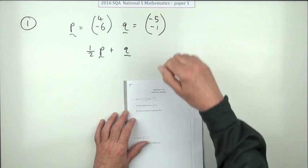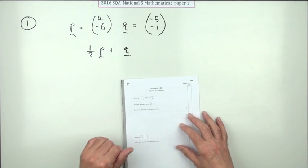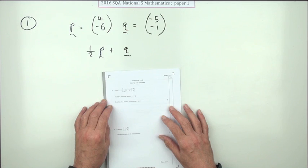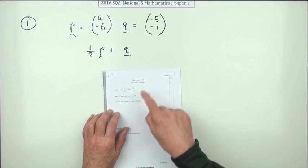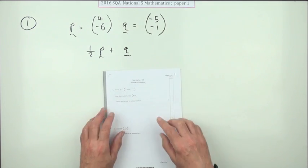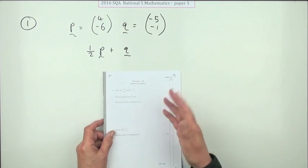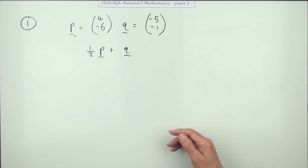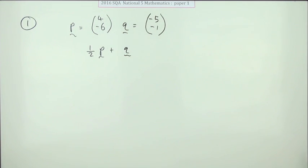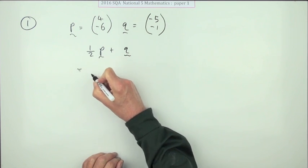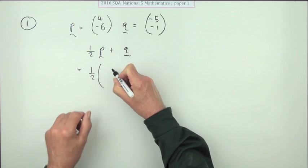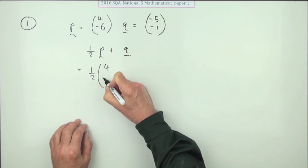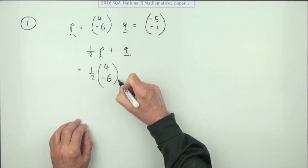Question 1 from Paper 1 of the 2016 National 5 Maths — two marks for finding a resultant vector in component form. That's really just two parallel pieces of arithmetic. It's a case of saying I've got half of P, so instead of substituting one figure in, you've got two.